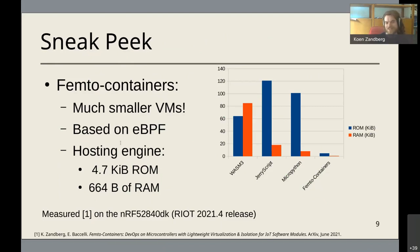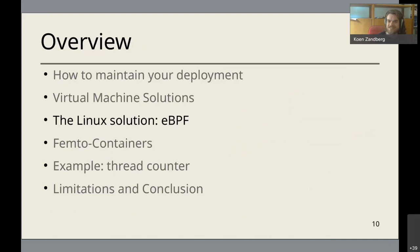Femto containers are optimized for this - a lot smaller. It takes less than five kilobytes of code to add, just above half a kilobyte of RAM for a virtual machine. That makes it a lot more suitable for very small systems. It's based on eBPF, which also explains its design.